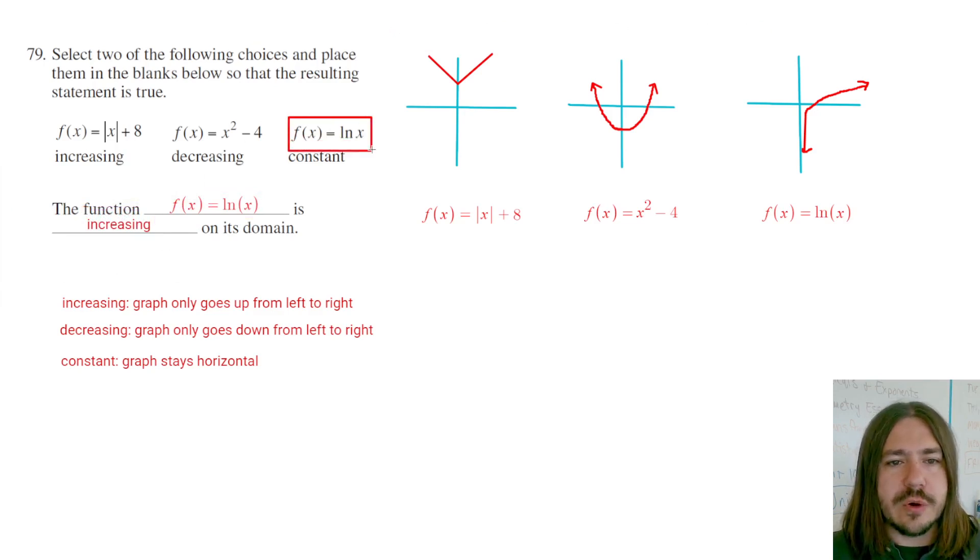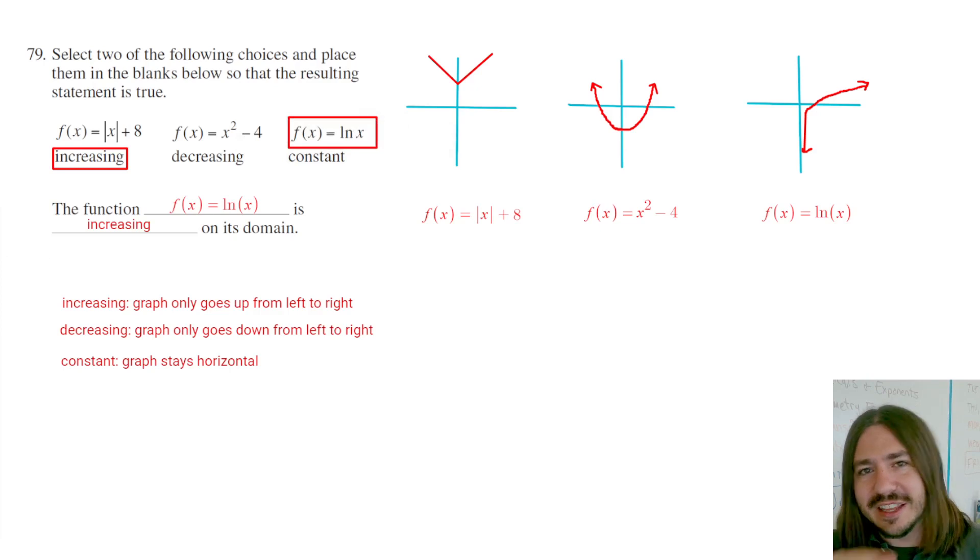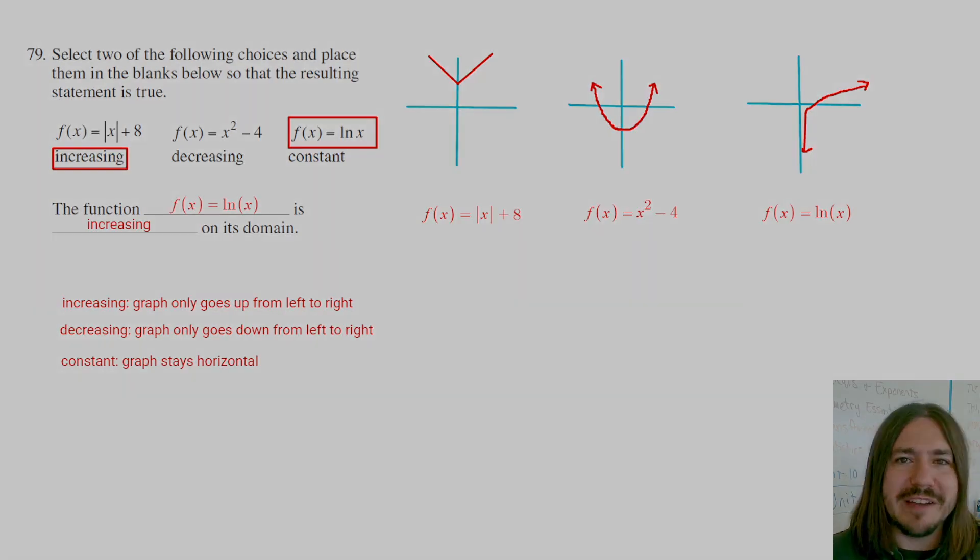So yeah, you do need to know or have just at least a general idea of what these graphs look like and then understand what it means by increasing, decreasing, or constant. Although those terms are pretty intuitive. I mean increasing it goes up, decreasing it goes down, constant it stays the same. It's just horizontal. And you read the graph from left to right. So when I'm saying it's going up I do mean from left to right. So that's it for number 79. Thanks for watching and y'all have a great day.